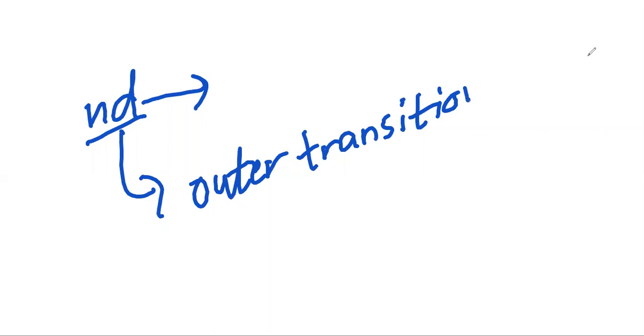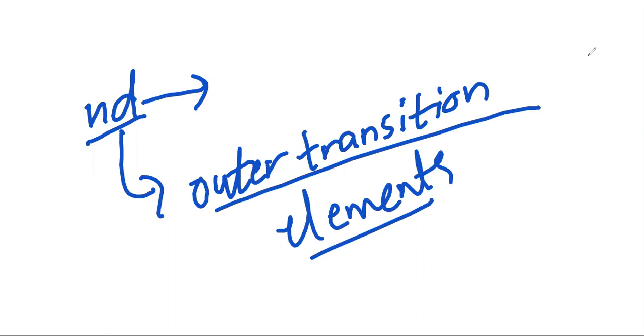They are also called outer transition elements. The elements which have partially filled d orbitals either in the ground state or in one or more of their ions are called d-block elements. This is the basic definition.